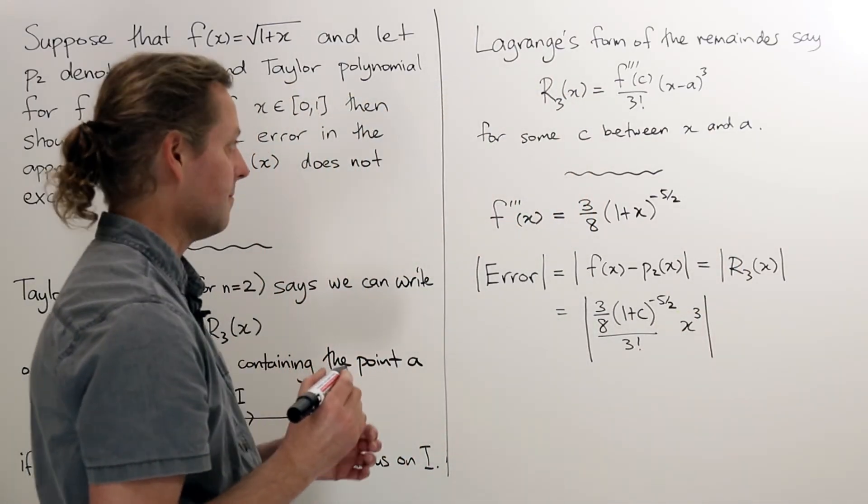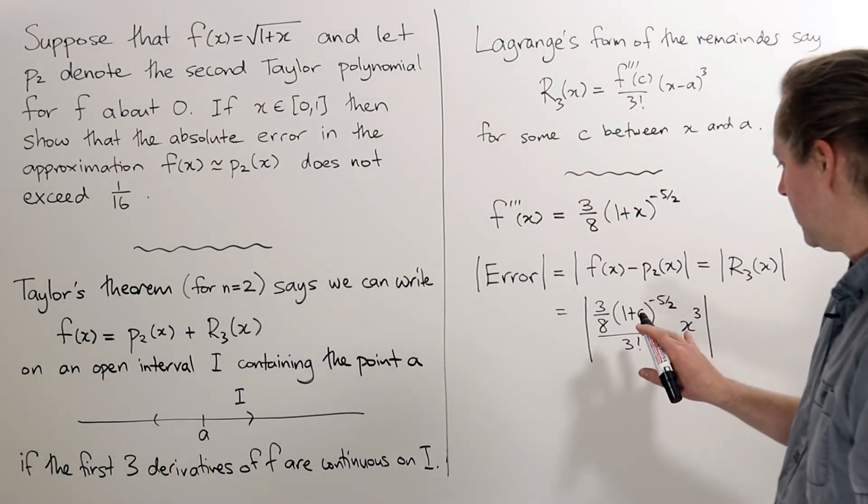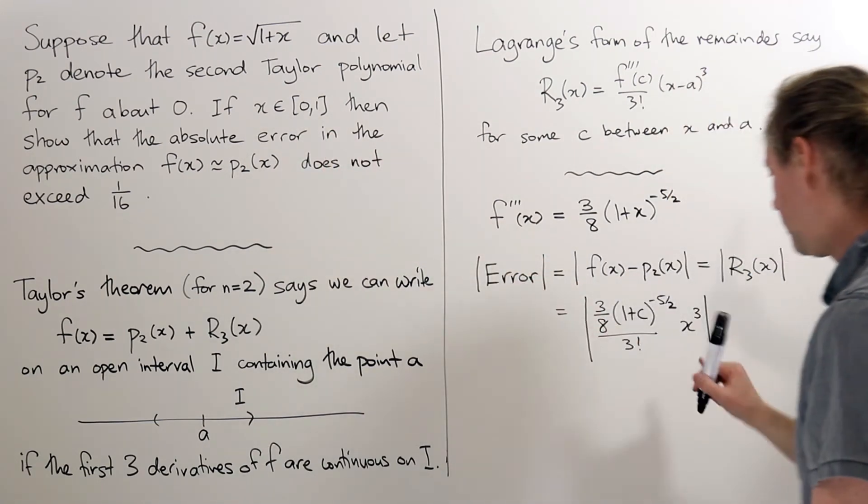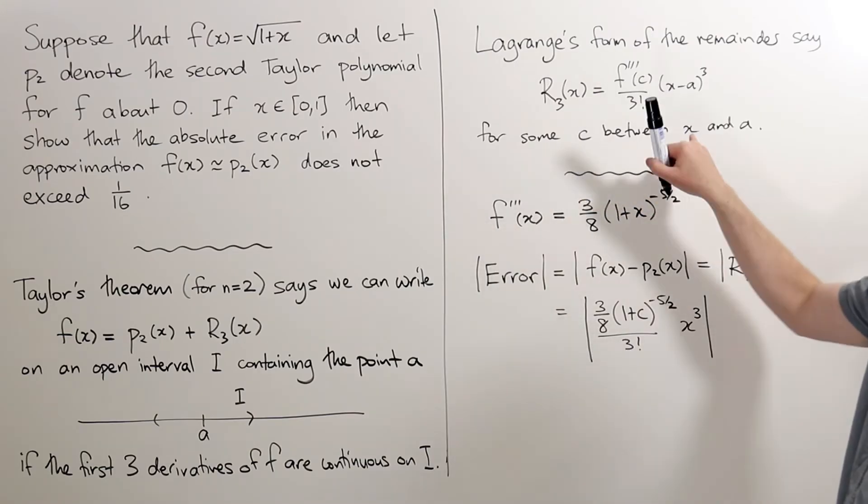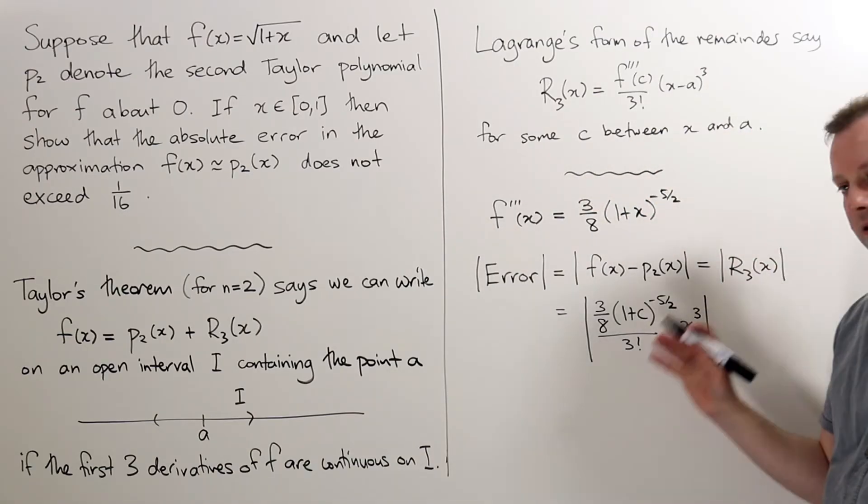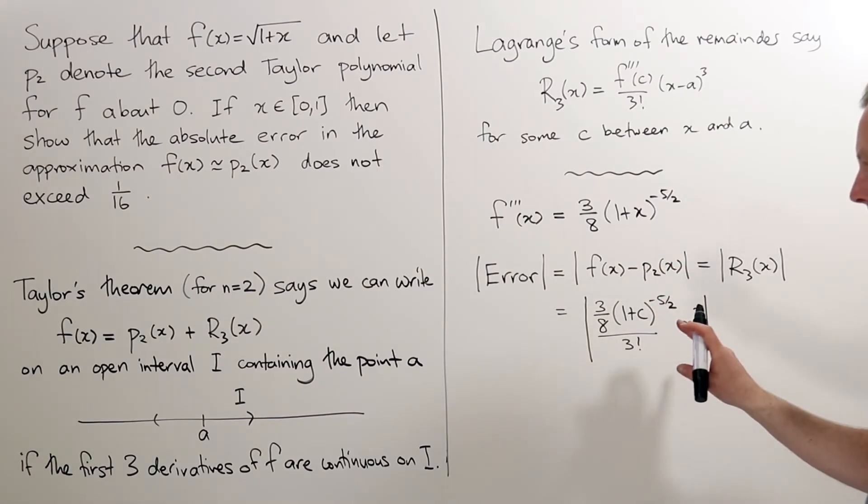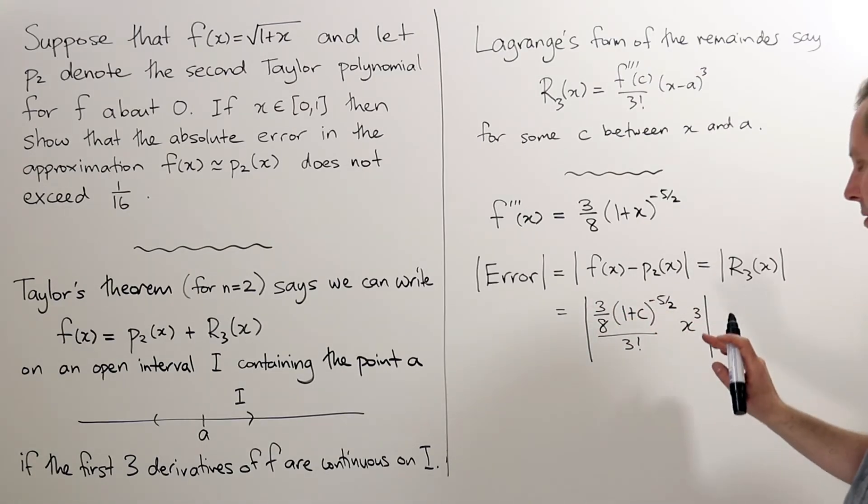Now how big could this be? Well, we know that x is in the interval between 0 and 1, so x is a number that's between 0 and 1, and c is between x and 0, a equals 0. So x and c are both numbers in the interval from 0 to 1, and from that we would like to say how big this can be, what's the largest it could possibly be.